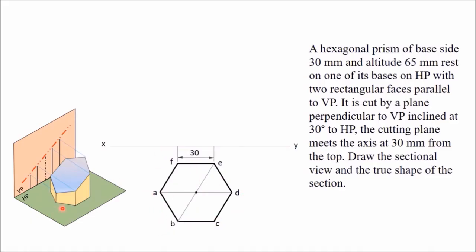Now project all these points — when you project all these points, they will appear on the XY line. Mark these points as A dash, B dash. When you look from the front, A dash, A, B, C, and D will be visible; E and F will not be visible. So I have written these two above the XY line. Join a solid line from A dash to D dash. Now draw the axis of height 65 mm.